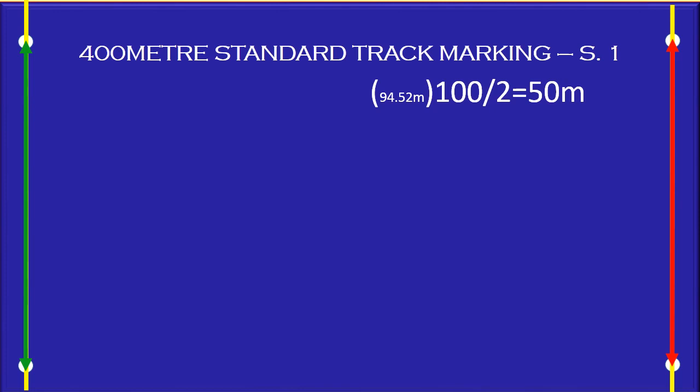100 divided by 2, 50 meters. These are the 50 meters point. Now, connect these points. This line separates the track horizontally.